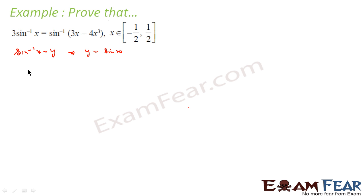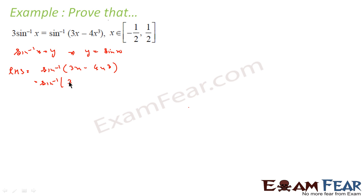The next step is to look at the RHS and see where it takes us. The RHS is sin⁻¹(3x − 4x³), and since x = sin y, this becomes sin⁻¹(3 sin y − 4 sin³y).